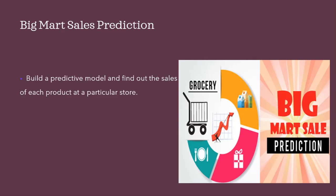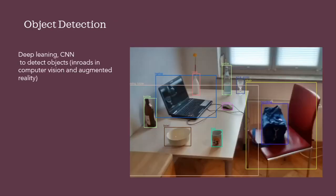Next is BigMart Sales Prediction. You have to build a predictive model to find the sales of each product at a particular store. BigMart wants to improve its revenue by finding patterns and understanding properties of products and stores. This is a great project if you want to move into the retail sector and work as an analyst, manager, or ML algorithm engineer.